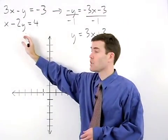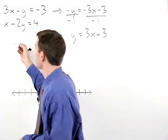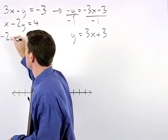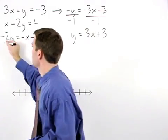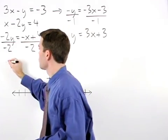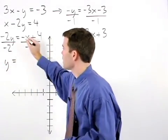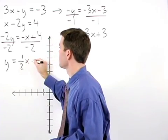For our second equation subtract x from both sides to get negative 2y equals negative x plus 4. Divide both sides by negative 2 and y equals positive 1 half x minus 2.